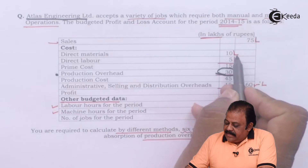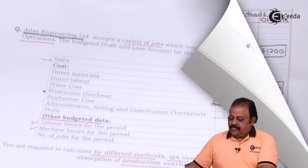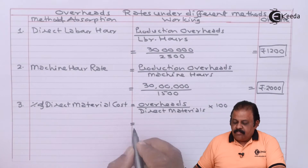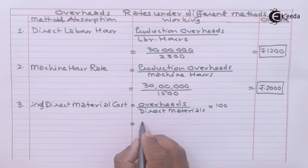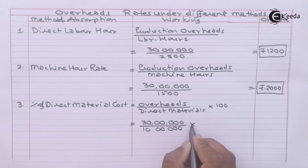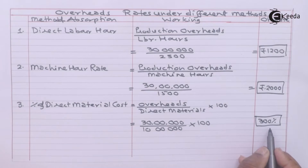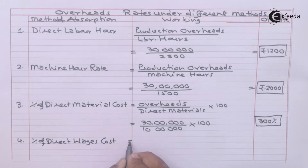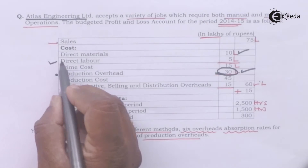For the direct material cost percentage method: direct material cost is 10 lakhs. Overheads 30 lakhs divided by direct materials 10 lakhs multiplied by 100 gives 300 percent.